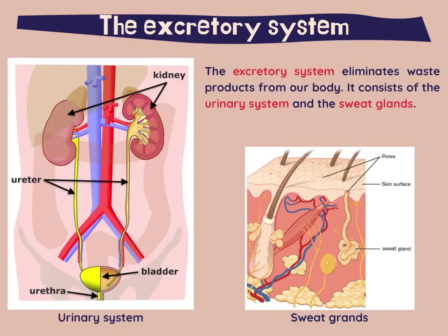Let's move on to the excretory system. The excretory system eliminates waste products from our body. It consists of the urinary system and the sweat glands.